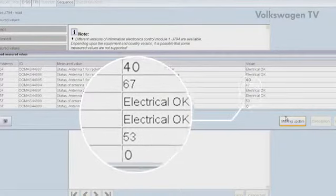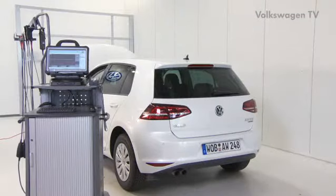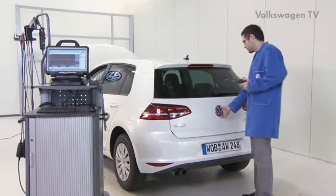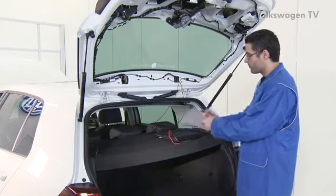Antenna 2 has a value of 0 decibel microvolts. That means it has no signal. Next carry out an electrical test. Take measurements at the rear window aerial.